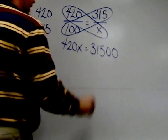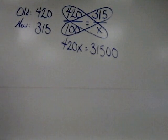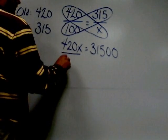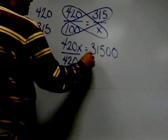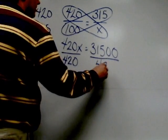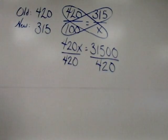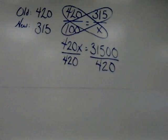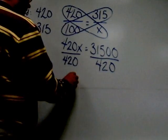Now it's a multiplication equation which we solve by doing the opposite operation, which is to divide. So I divide both sides by 420, and when I do this division I obtain a result of 75, which is the value of X.